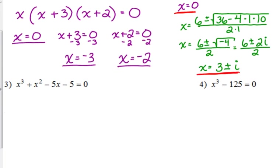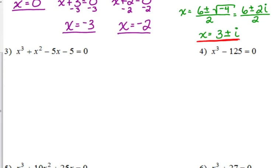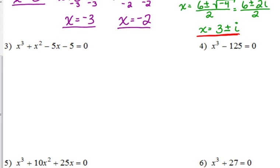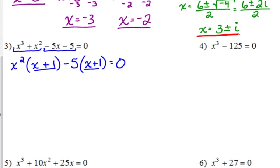Alright. Let's look at number 3. x cubed plus x squared minus 5x minus 5 is equal to 0. What kind of factoring do we need to do there? Grouping. That's what we learned yesterday. We need to group it. Four terms tell us that we need to group it. So, x cubed plus x squared. What do they have in common? x squared. So, we are left with x plus 1. What do we need to take out of negative 5x minus 5? Negative 5. That leaves us with x plus 1. Remember, those have to be the same.